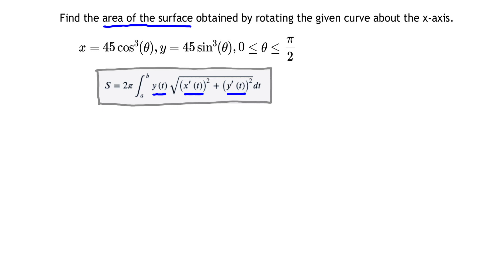So I can rethink of this formula as 2π times the integral from 0 to π/2 of y(theta), which is 45 sine cubed theta, times the square root of (dx/dθ)² plus (dy/dθ)², dθ at the back end.